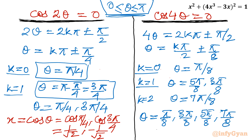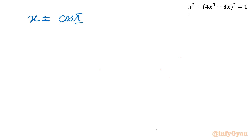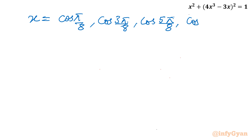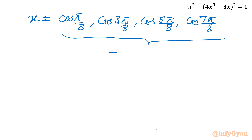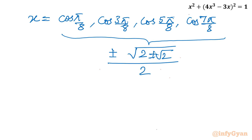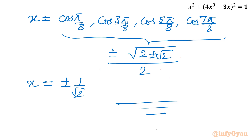The corresponding x values are cos(π/8), cos(3π/8), cos(5π/8), and cos(7π/8). These four values equal ±√(2 ± √2)/2, matching the solutions calculated earlier. Together with ±1/√2, all six solutions are confirmed. I hope you liked this video — thank you for watching, don't forget to like, share, and subscribe. Bye bye!